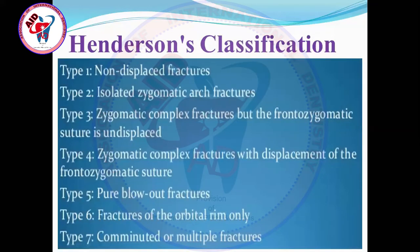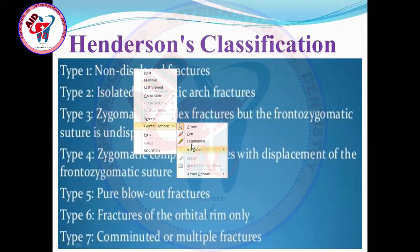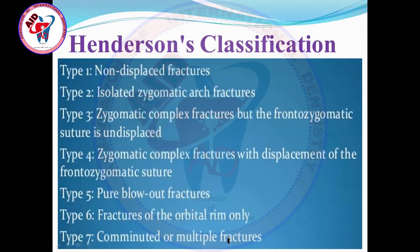According to Henderson's classification, zygomatic maxillary complex fractures are divided into seven types. Type 1 is undisplaced fracture. Type 2 is isolated zygomatic arch fracture. Type 3 is zygomaticomaxillary complex fracture with the frontal zygomatic suture undisplaced — meaning if the frontal zygomatic suture is intact or not distracted, it is type 3. Type 4 is zygomaticomaxillary complex fracture with the frontal zygomatic suture distracted or displaced. Type 7 is comminuted, maximally displaced fracture.